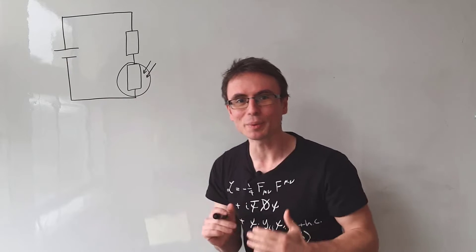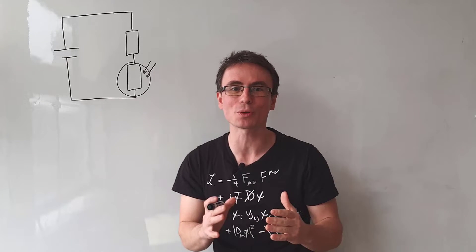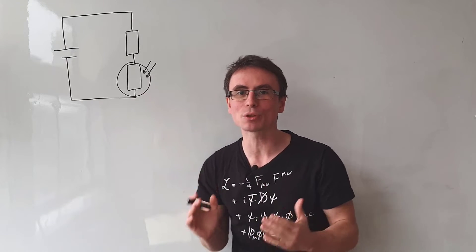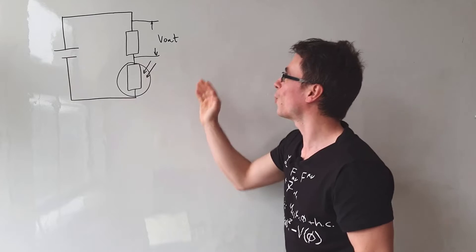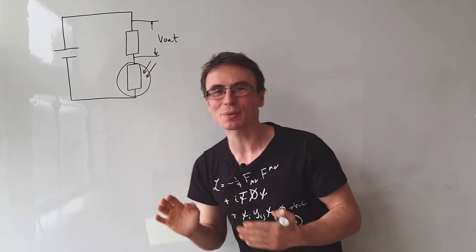The first thing that we need to do after we draw a potential divider circuit is decide where to place the output voltage. I am going to place my output voltage across the fixed resistor.